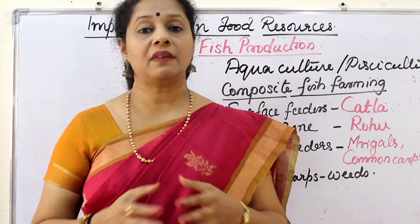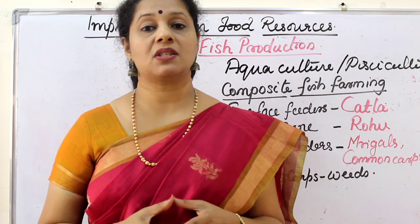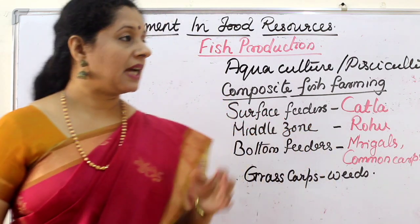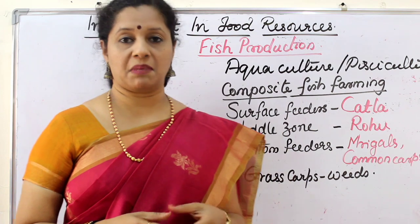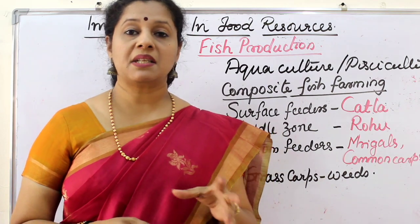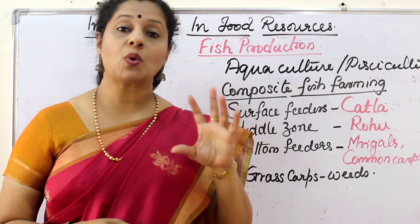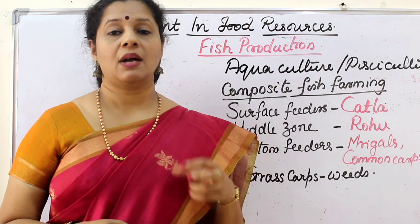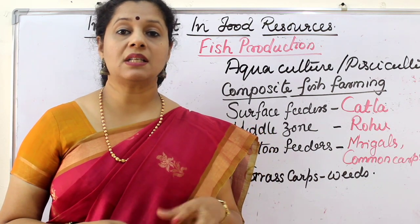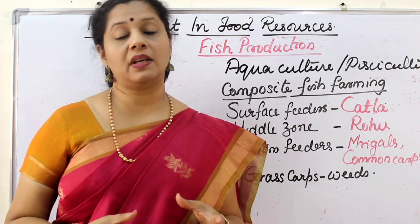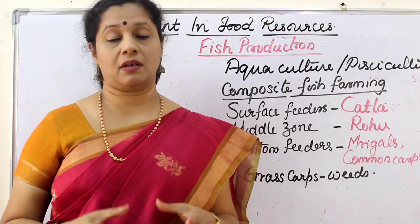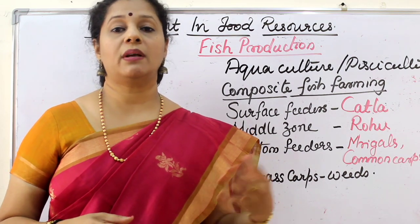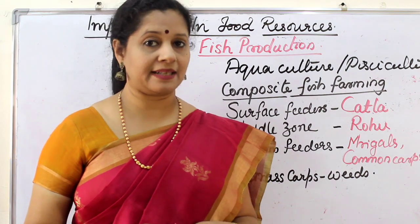This kind of inland fish farming is called aquaculture. There is a difference between aquaculture and pisciculture: pisciculture means culturing only fish, whereas in aquaculture we culture all kinds of aquatic organisms, including prawns and mussels.